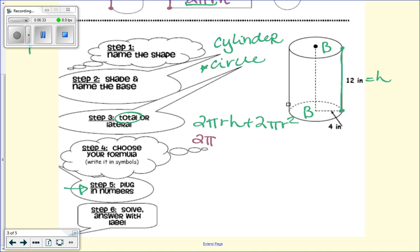What's our radius? 4. Here's your radius. And what is the height? 12. Good. Plus 2π. What was our radius? 4 squared.